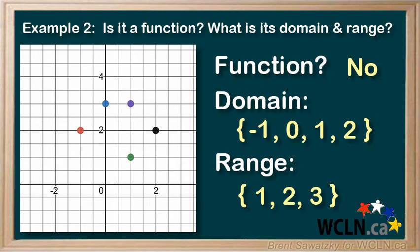So to answer the original question, we have three parts. This one is not a function. The domain is a list of values negative 1, 0, 1, and 2. And the range is also a list of values 1, 2, and 3.